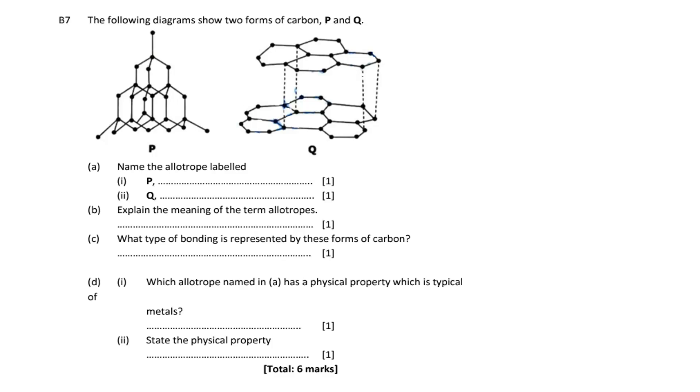This first one is called diamond, and the second one is graphite. Therefore, P here is diamond, and this one is graphite. Now under each of these, you should know the characteristics of diamond and also of graphite.